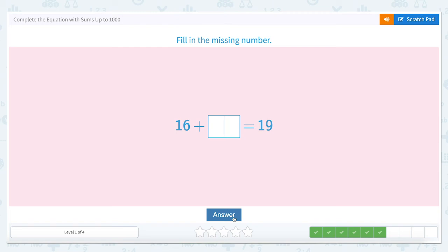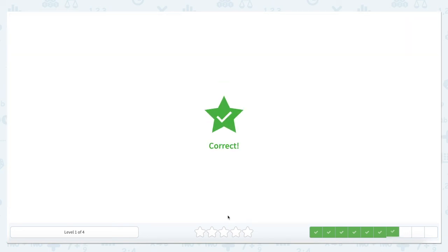16 plus something equals 19. We could very easily rewrite this one as a subtraction problem, but you might be getting the hang of it. 16 and 19 are pretty close in number here. So 16 plus something else, I'm going to count in my head, 16, 17, 18, 19. Well, that's 3. So let's see if adding 3 gives us the right answer. It does!